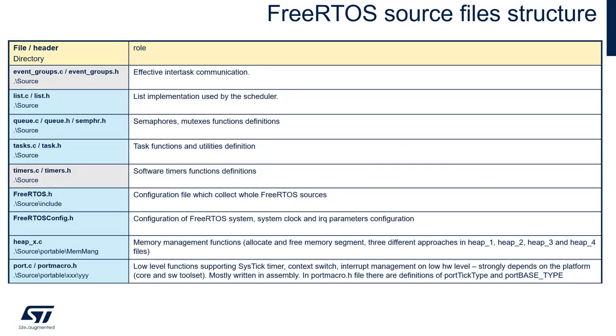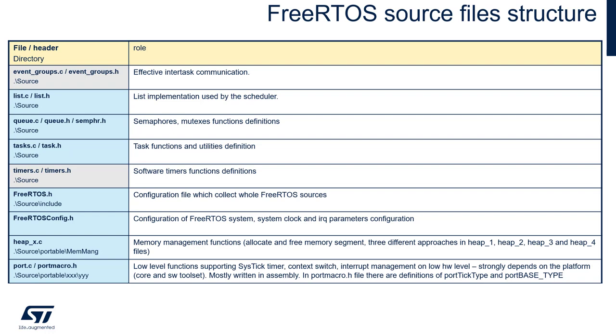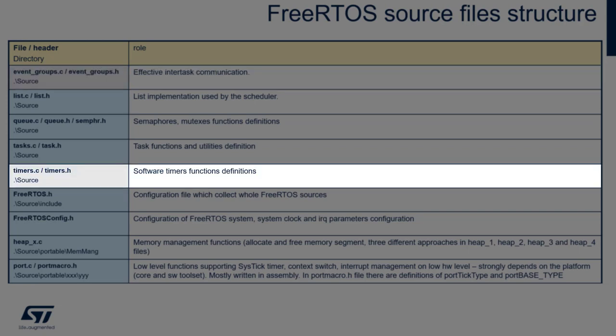Additional FreeRTOS files include queue.c, queue.h, and semaphore.h — native FreeRTOS files containing code for queues, semaphores, and mutexes. Less critical but sometimes used are event_groups.c and event_groups.h for fast task-to-task communication, and timers.c and timers.h providing the FreeRTOS API for software timer services.